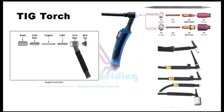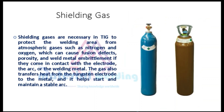Next is the TIG torch, which consists of various components as shown in the picture. Various types of TIG torch are also shown. Next is shielding gas. Shielding gases are necessary for TIG to protect the welding area from atmospheric gases such as nitrogen and oxygen, which can cause fusion defects, porosity, and weld metal embrittlement if they come in contact with the electrode, the arc, or the welding metal. The gas also transfers heat from the tungsten electrode to the metal and helps start and maintain a stable arc.